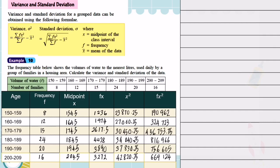After obtaining all these values, find the total frequency. The total frequency equals 95. Then find the total of fx, which is 17,417.5, and the total of fx squared.